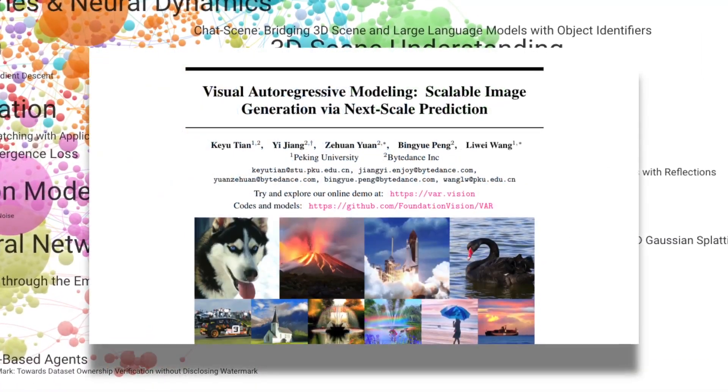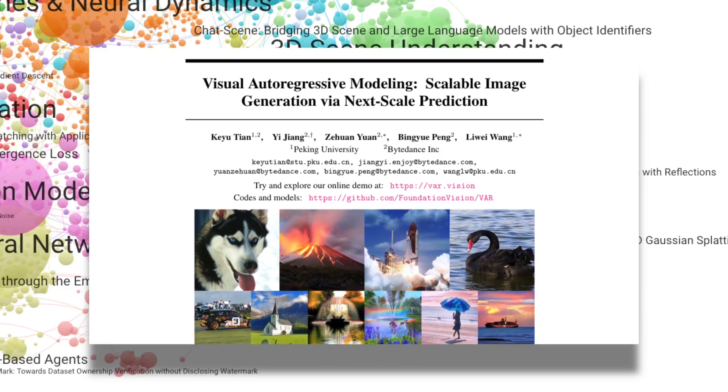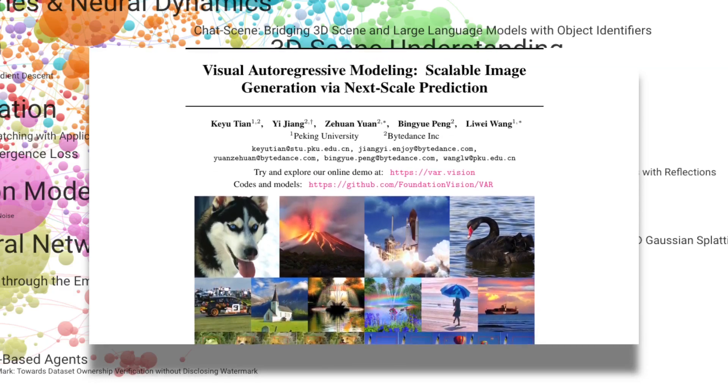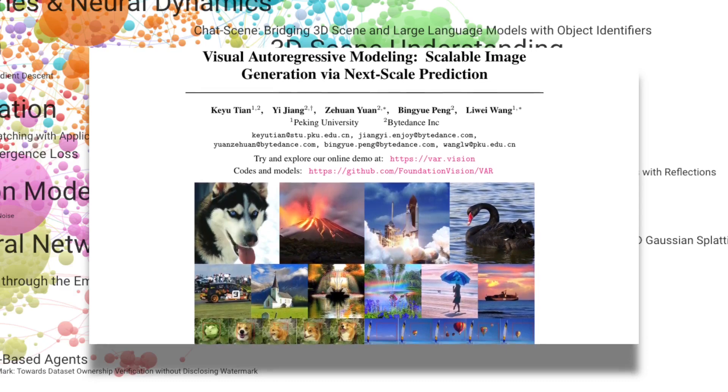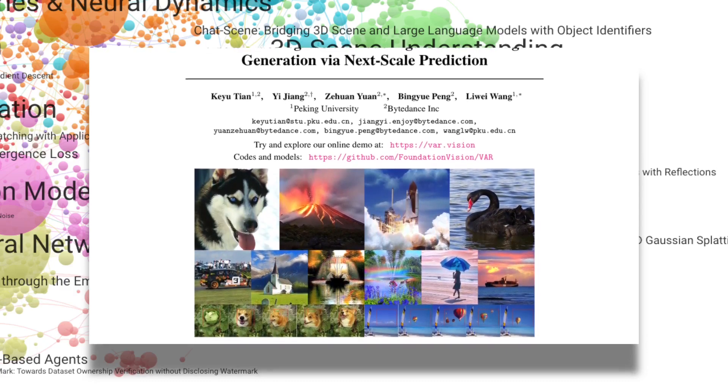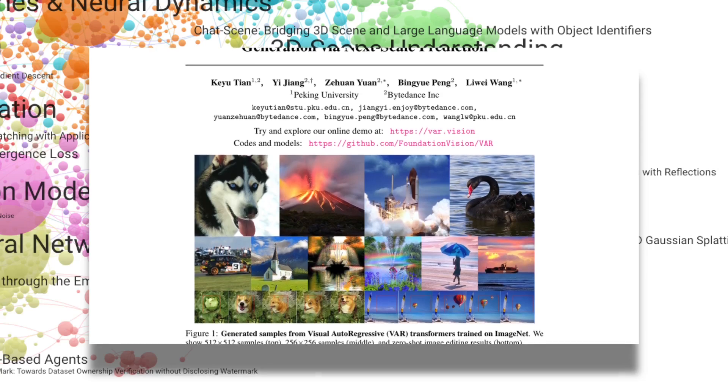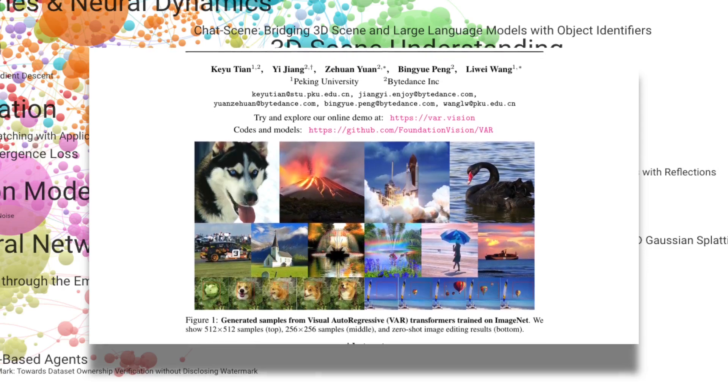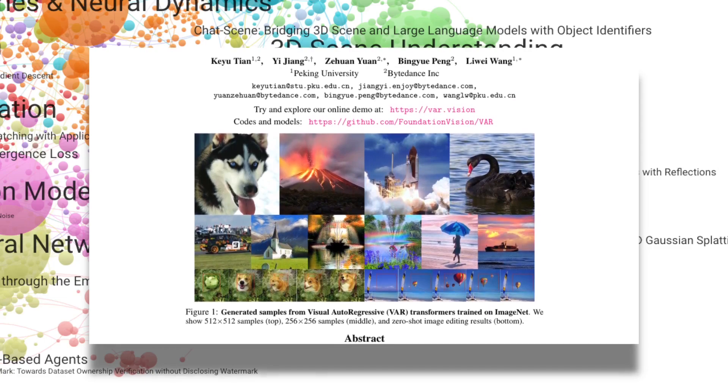On the image generation front, unlike traditional raster scan token prediction, Visual Autoregressive Modeling uses a coarse-to-fine, next-scale prediction approach, outperforming diffusion transformers on metrics like FID while being 20 times faster.